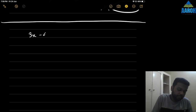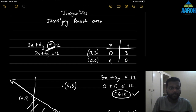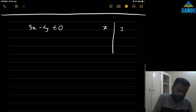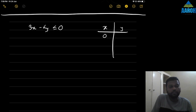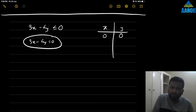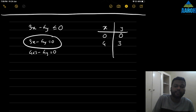Let's say we have another line: 3x minus 4y is less than or equal to 0. First let's draw the graph. If x is 0, then minus 4y equals 0, so y is also 0. So both x and y are 0 — the line passes through the origin. If x is 4, then 12 minus 4y equals 0, so 4y equals 12 and y equals 3. So the two points are 0 comma 0 and 4 comma 3.